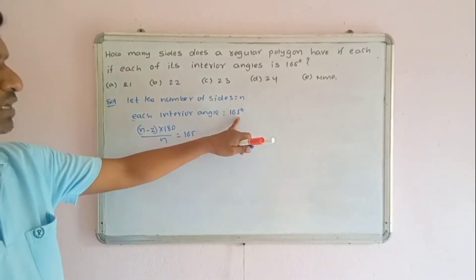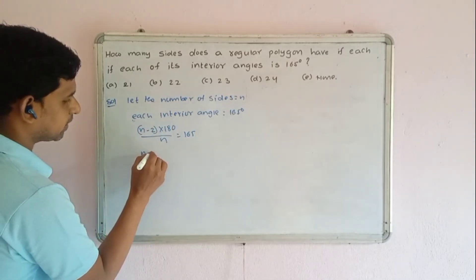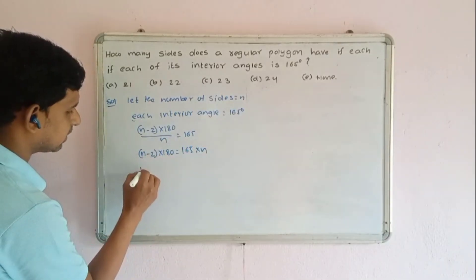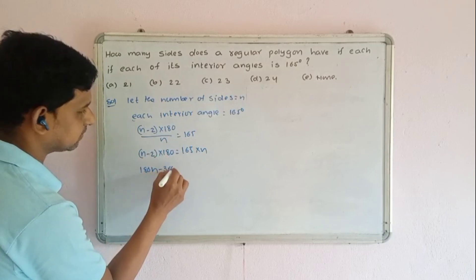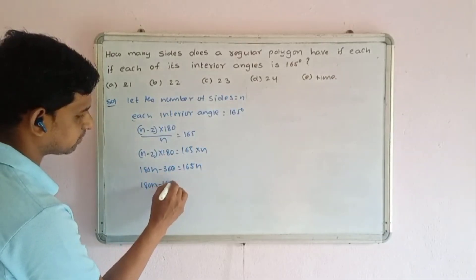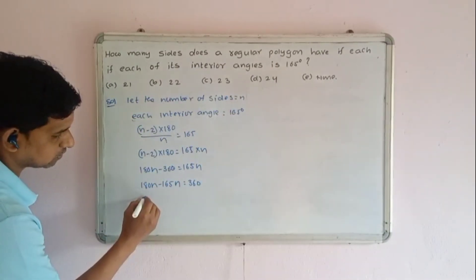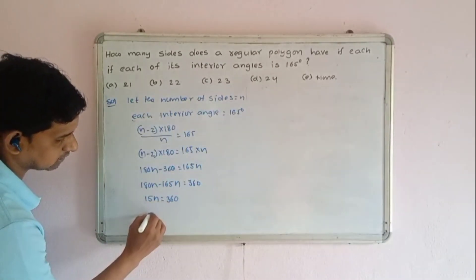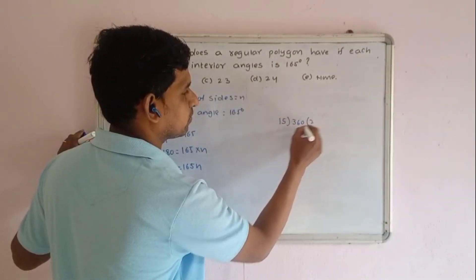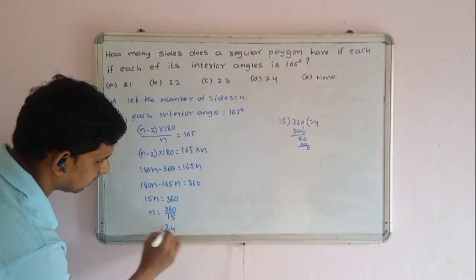Solving: (n minus 2) into 180 equals 165n. So 180n minus 360 equals 165n. Therefore 180n minus 165n equals 360, giving 15n equals 360, so n equals 360 divided by 15, which equals 24.